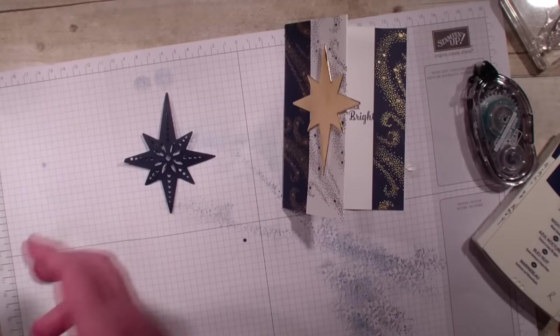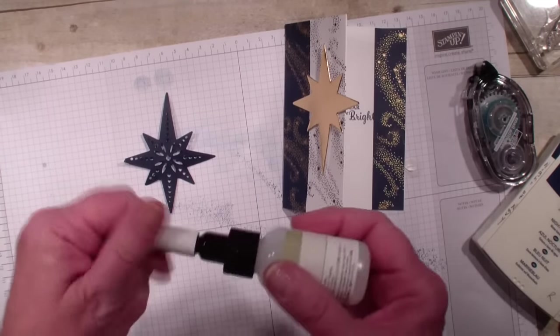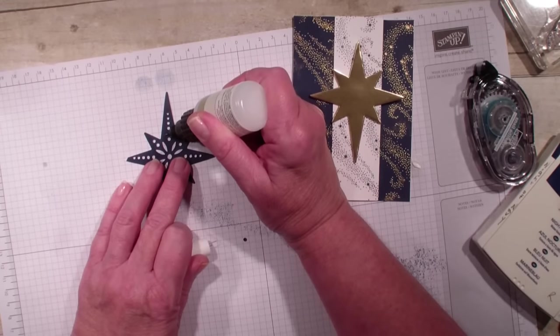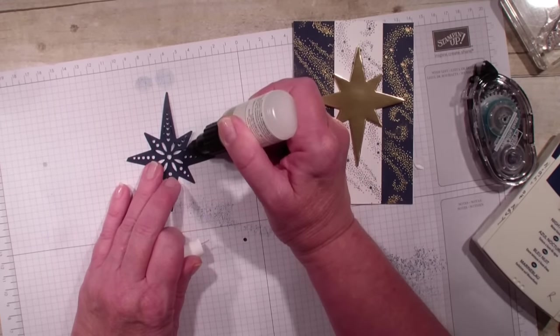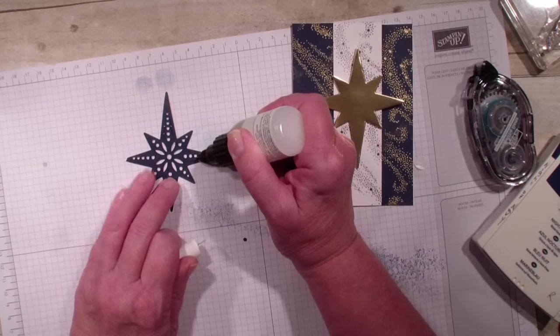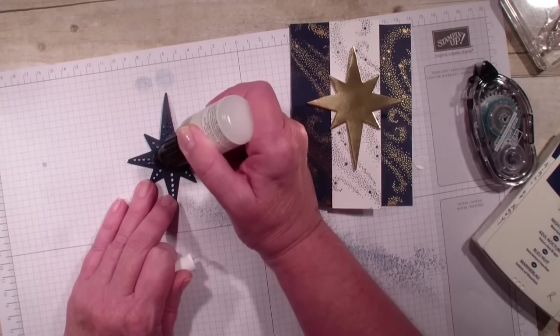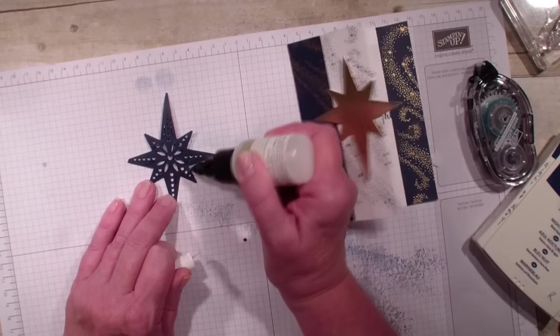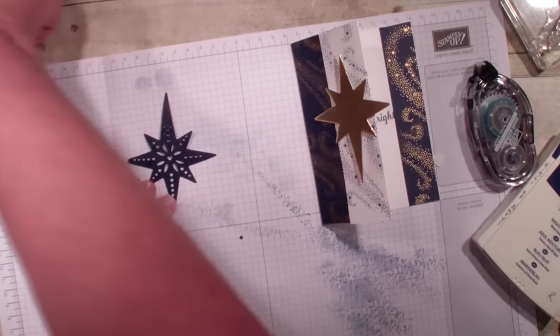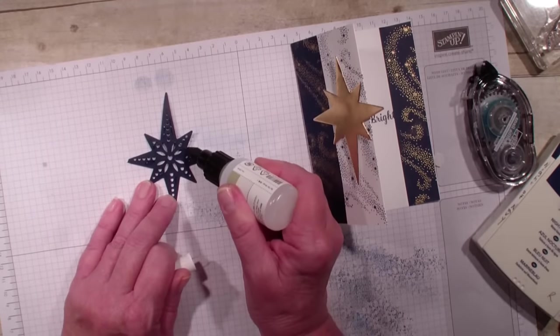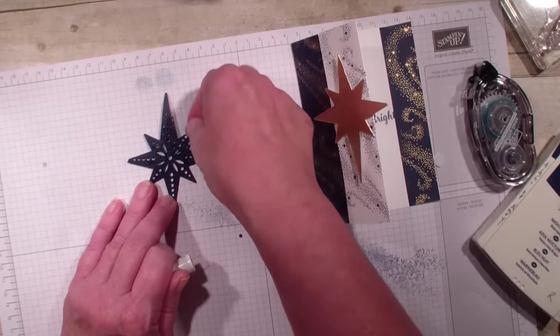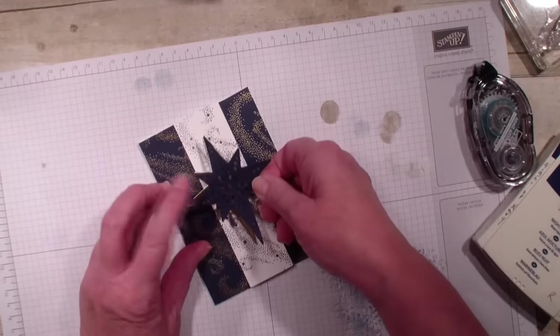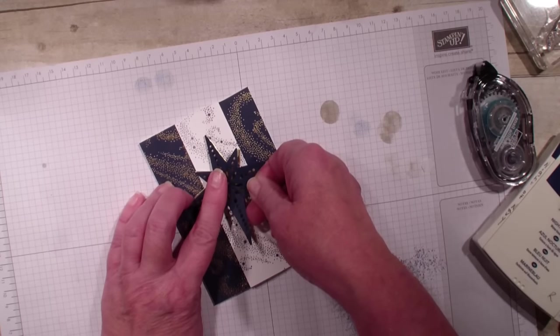And then I'm going to turn over my Knight of Navy. I am going to be using my fine tip glue pen. I'm just going to add some glue on that star. And then I'm going to be adding that to the front of that gold. Lots of possibilities with this stamp set.